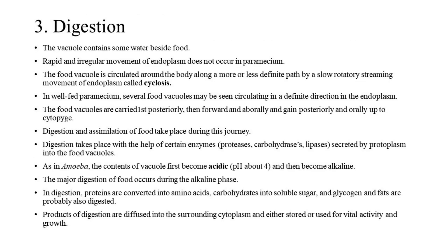Digestion: the vacuole contains some water beside food. The food vacuole is circulated around the body along a more or less definite path by a slow rotatory streaming movement of endoplasm called cyclosis. In well-fed paramecium, several food vacuoles may be seen circulating in a definite direction in the endoplasm. The food vacuoles are carried first posteriorly, then forward and aborally, and again posteriorly and orally up to the cytopyge. Digestion and assimilation of food take place during this journey.